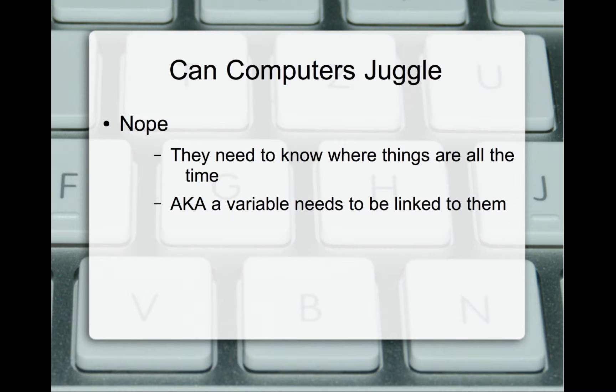Since computers can't juggle, swapping takes more than two hands. To swap variables, it takes at least three hands. We have to have a variable attached to that. So that's why we have to ask ourselves that question, can computers juggle? We take a look at this in the next slide.